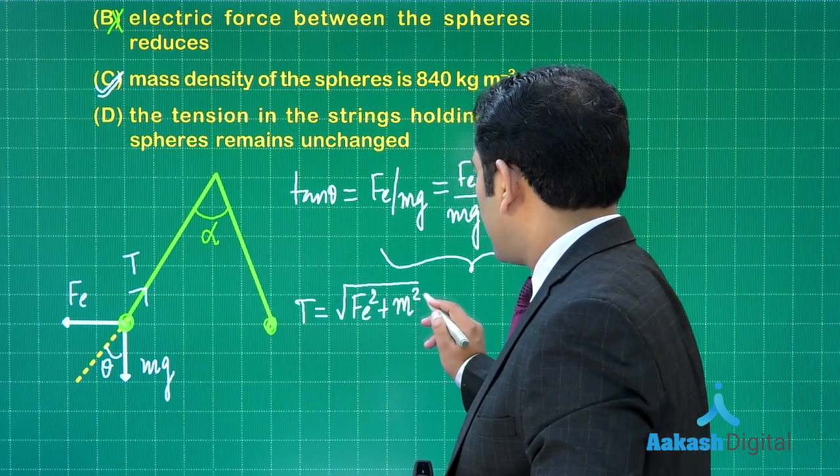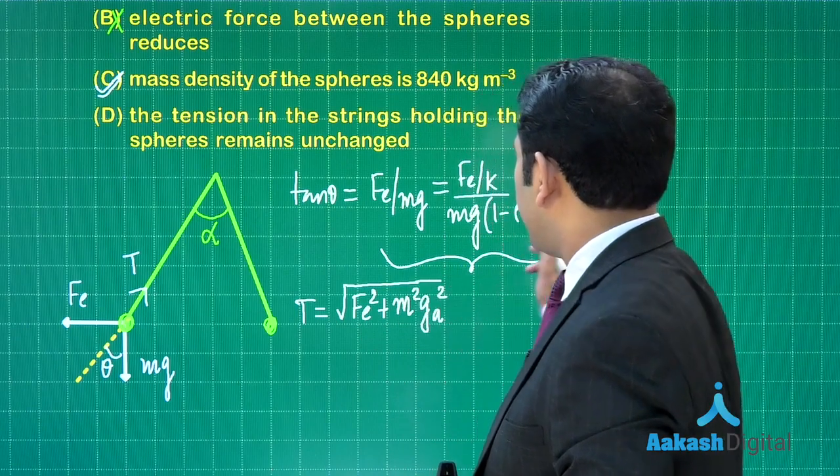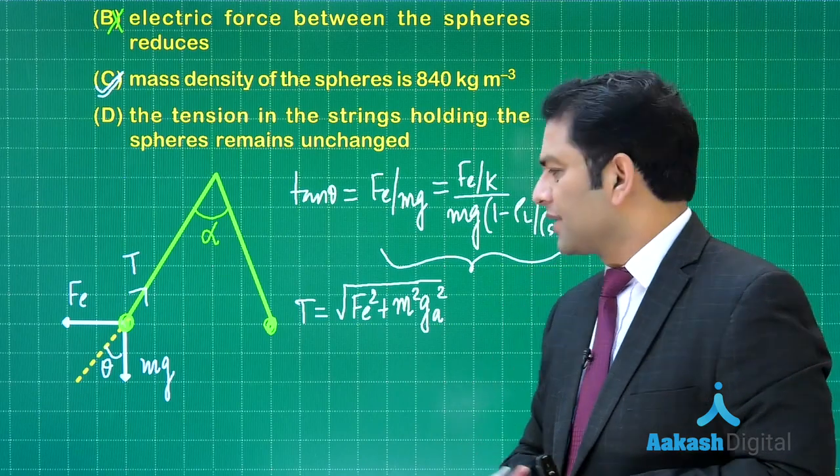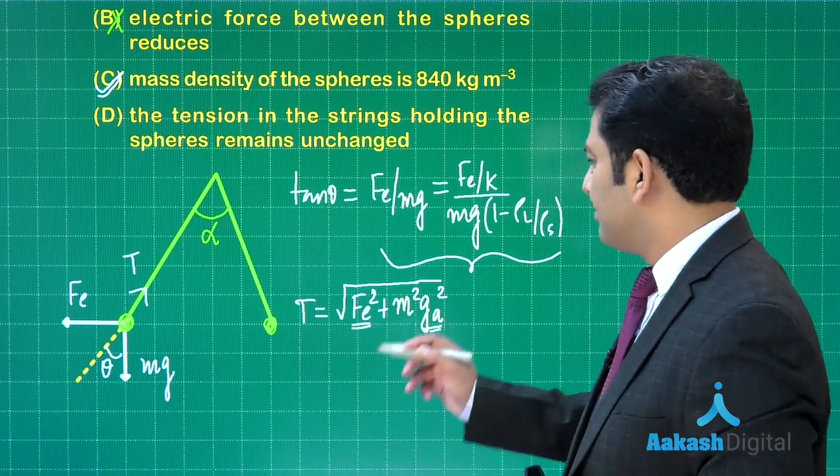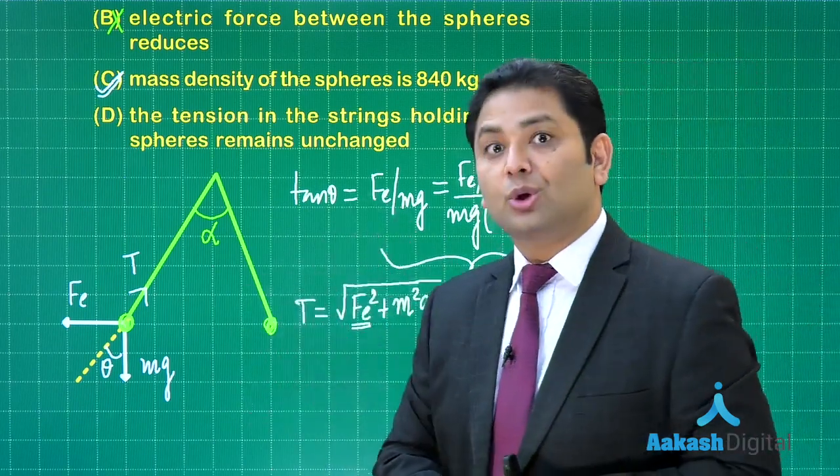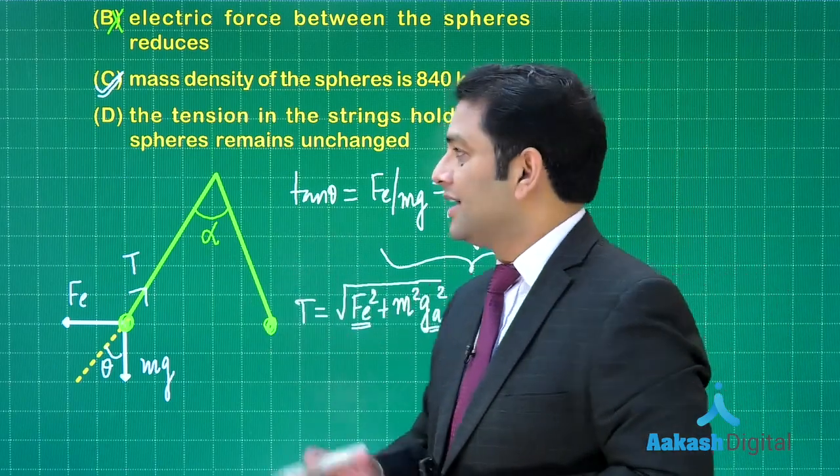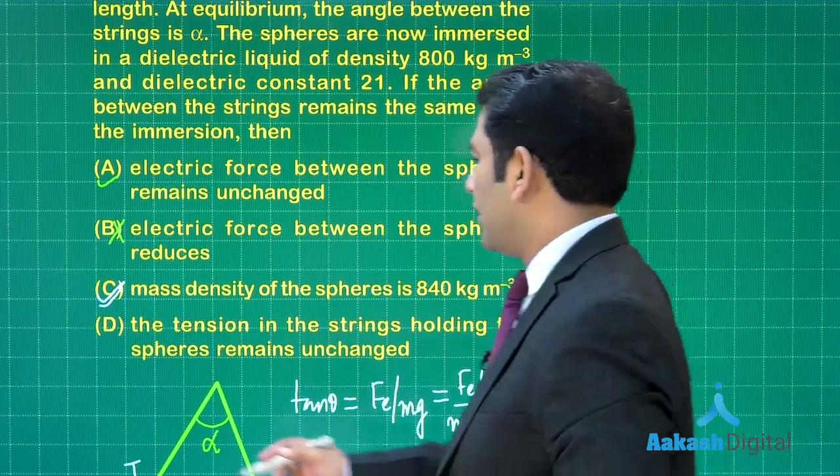Where g apparent is g times (1 minus density of liquid by density of solid). It is clear: this force decreases, g apparent decreases, so obviously the value of tension will decrease. That means it cannot be the same. Therefore, options A and C are the correct ones.